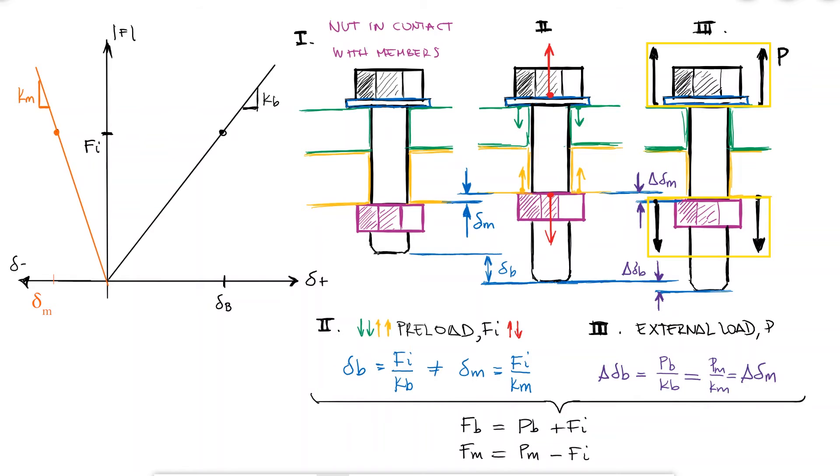As the external load is introduced, the compression of the members is reduced because they are being stretched by this external load, and the elongation of the bolt is increased. Since they're both connected, they're both stretched by the same amount. This means that the bolt was subjected to the fraction of the external load that goes into the bolt PB, and the members were subjected to the fraction PM. The total external load equals the sum of the two. With this, we know that the total force that goes into the members FM will be Fi minus PM, which is what we stated earlier.